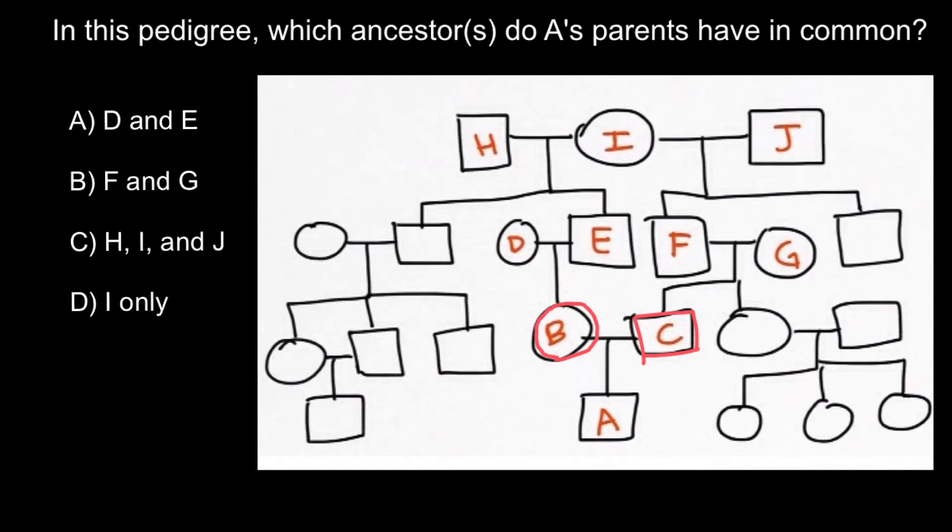So we can say that the common ancestor here would be only individual I. This individual would be the grandmother of both individual B and individual C.